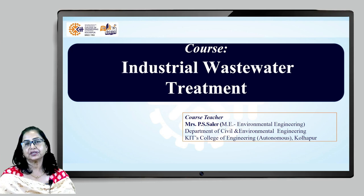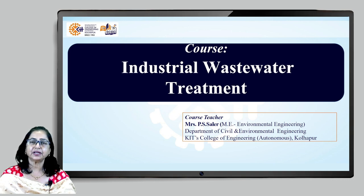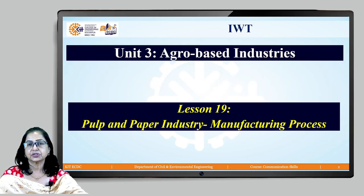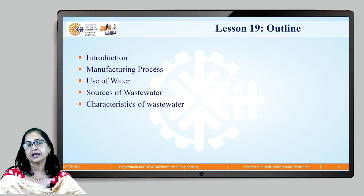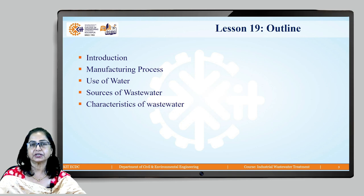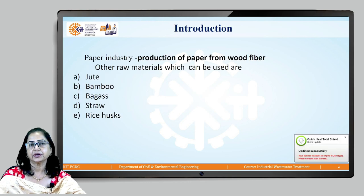In this course on industrial wastewater treatment, today's lecture discusses yet one more agro-based industry: the pulp and paper industry. Here, natural fiber — mainly wood — is used for manufacturing paper, which is why it is considered an agro-based industry. The outline of the content includes introduction, manufacturing process, use of water, sources of wastewater, and characteristics of wastewater for the pulp and paper industry.